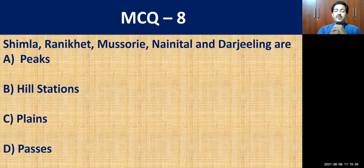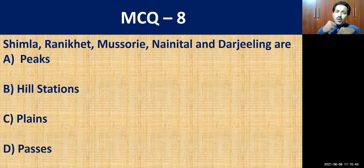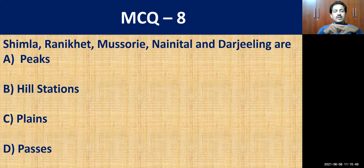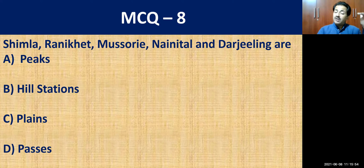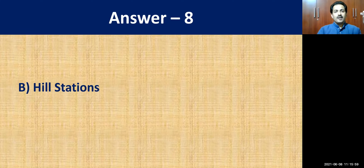MCQ question number eight: Shimla, Ranikhet, Mussoorie, Nainital, and Darjeeling are — peaks, hill stations, plains, or passes? Everyone knows these places — people visit them particularly in summer season. They are all hill stations.